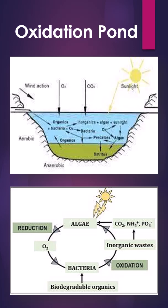By using natural processes, algae grow using sunlight and produce oxygen through photosynthesis. Aerobic bacteria use this oxygen to break down organic matter. Anaerobic bacteria work in deeper oxygen-poor layers to decompose more complex substances. Solids settle to the bottom.